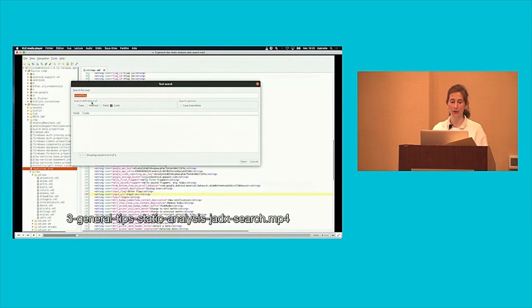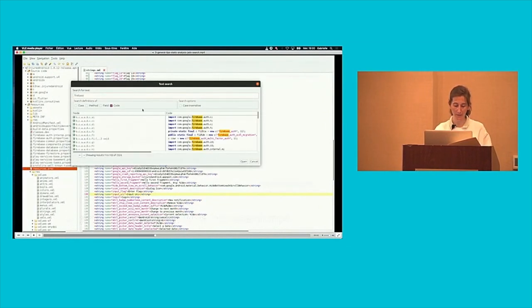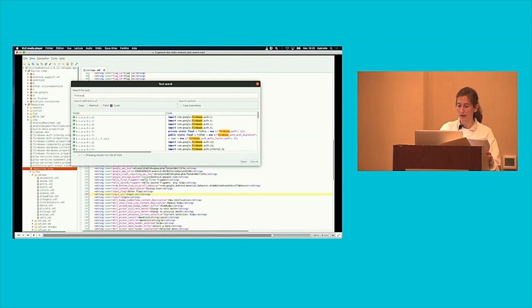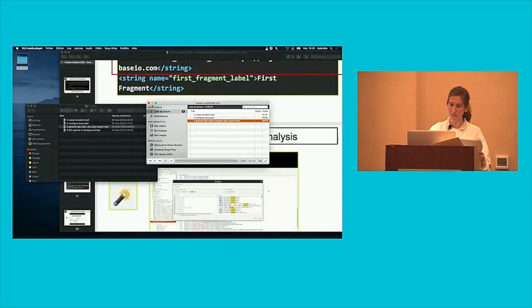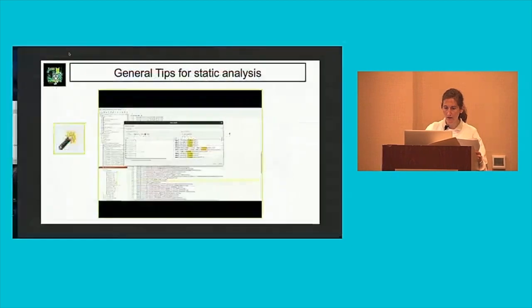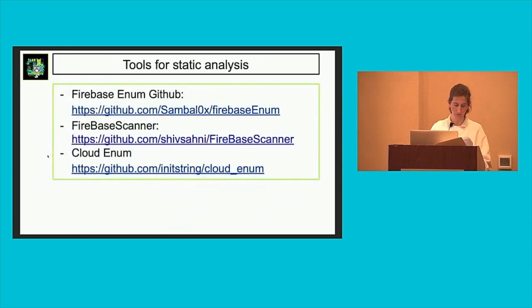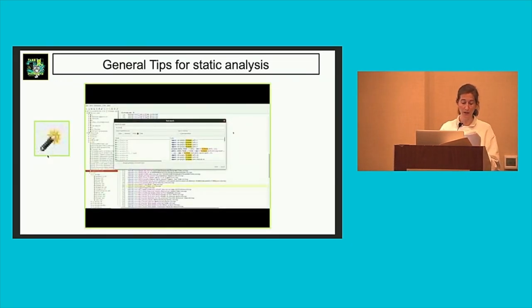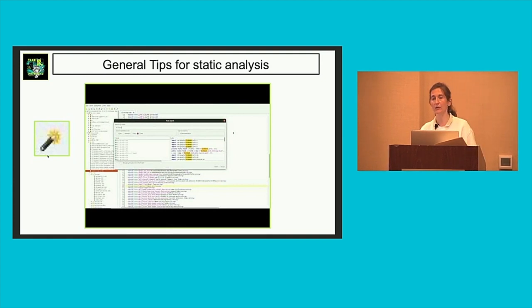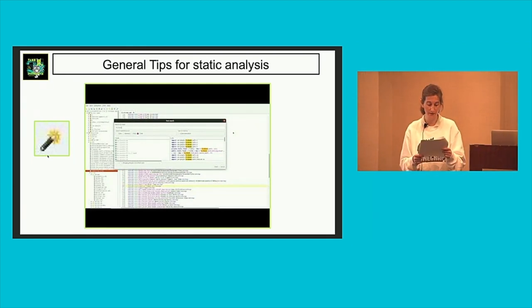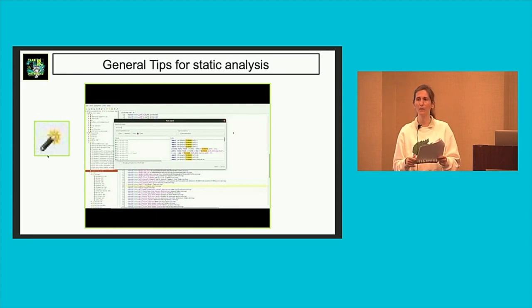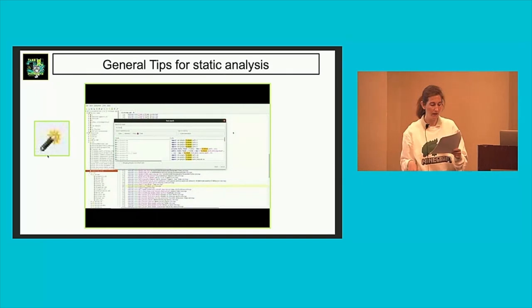It's very useful to check for strings in the Jadx GUI. You can search for 'Firebase,' for instance, and it will show you everywhere it appears. It's very important to check for URLs, secret keys, credentials, comments — sometimes developers leave things in comments like a password for tests — and strings like 'API_key.'